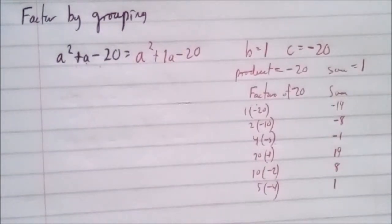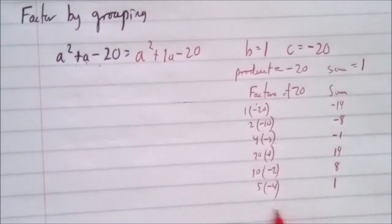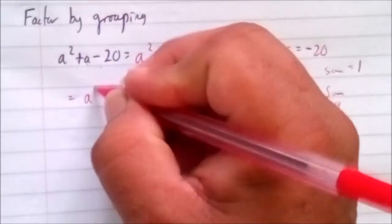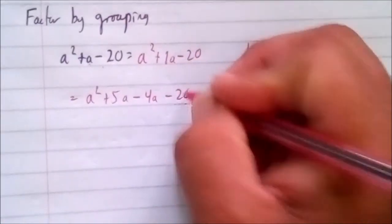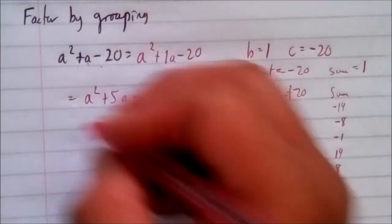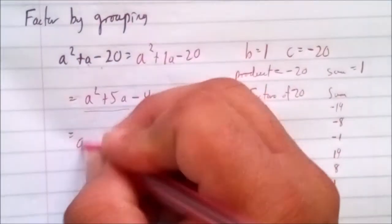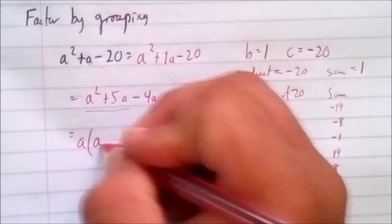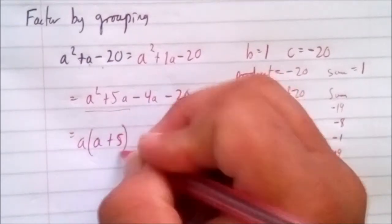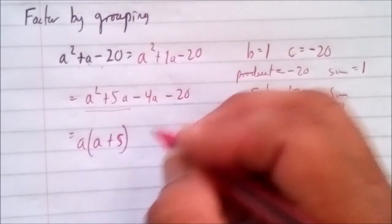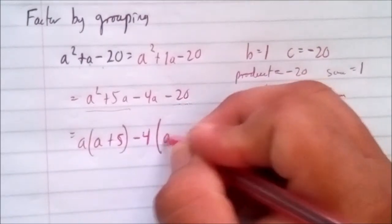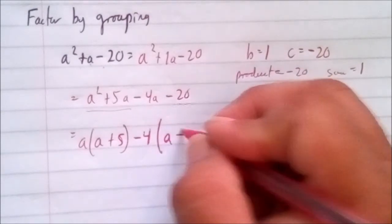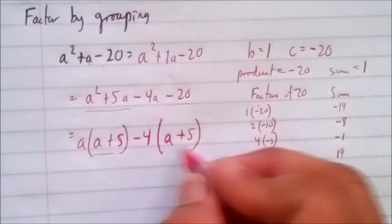The last row gives us a sum of 1 and a product of negative 20, so that's our combination. We write a squared plus 5a minus 4a minus 20. We factor out a from the first two terms: a squared divided by a gives a, and 5a divided by a gives 5. Then we factor out negative 4 from the last two terms.